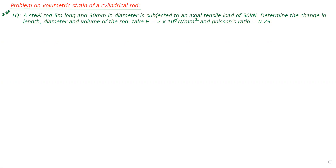Look at here. The given question: a steel rod 5 meters long and 30 millimeters in diameter is subjected to an axial tensile load. A pulling force is acting on it which is equal to 50 kN. Determine the change in length, change in diameter, and change in volume of the rod.